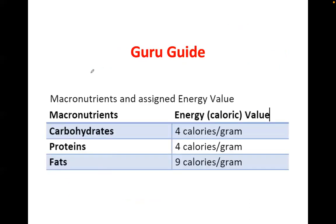This is your guru guide as to the caloric values: carbohydrates is 4, proteins is 4, while fats — only fats — is 9. So 9-4-4, or however you want to memorize it.